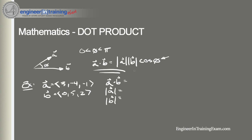The dot product a dot b is 3 times 0, plus negative 4 times 5, plus negative 1 times 2, which gives us a scalar value of negative 22. The magnitude of a is the square root of 26, and the magnitude of b is the square root of 29.